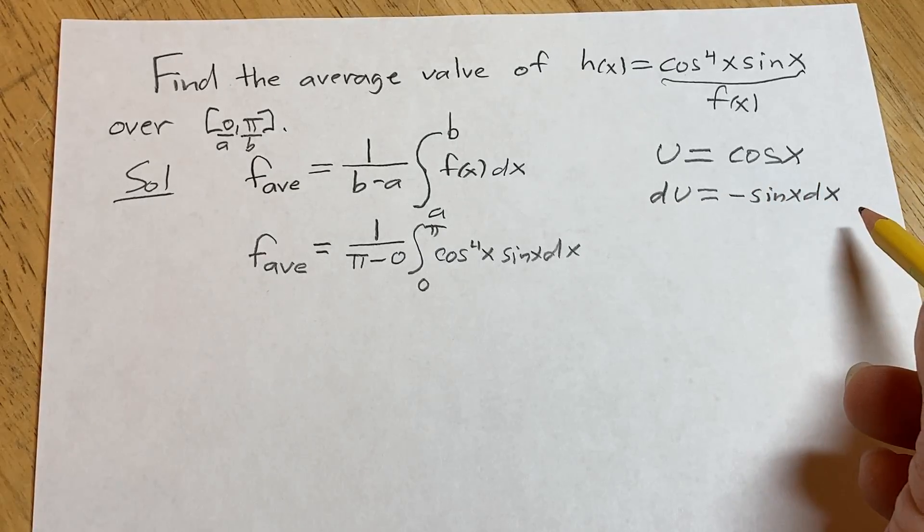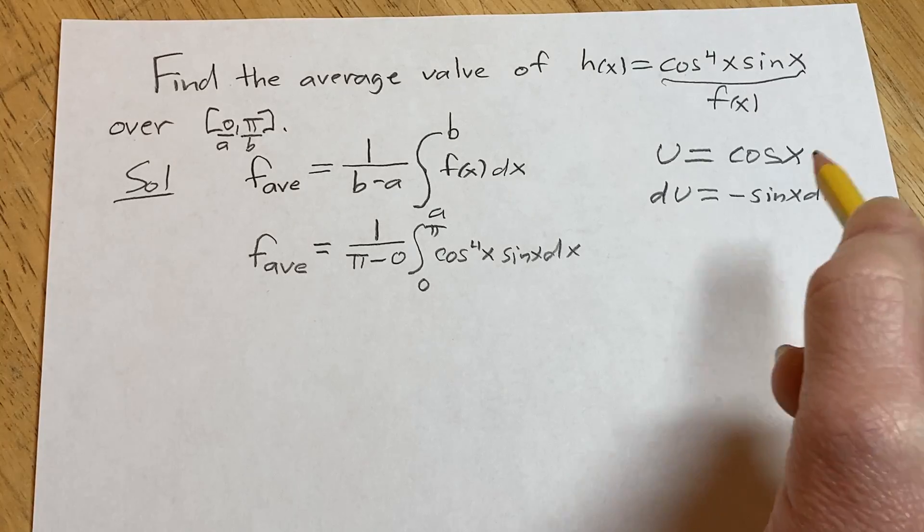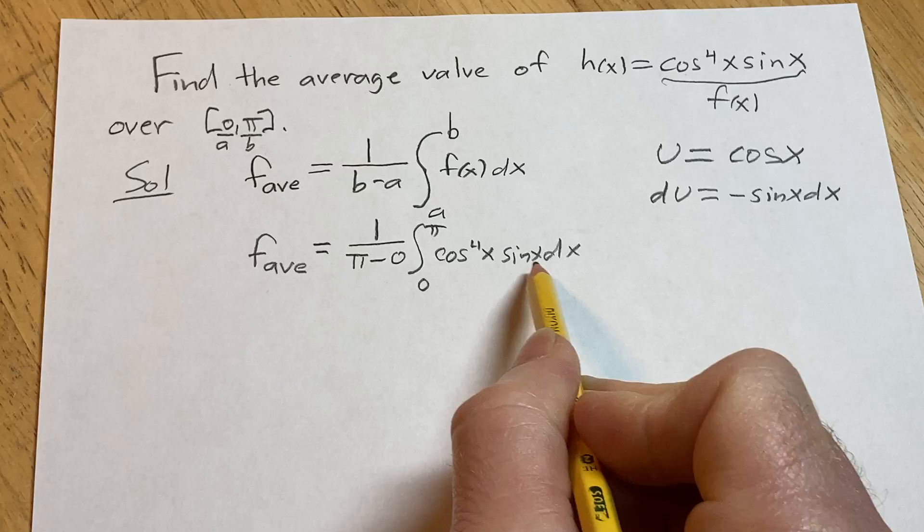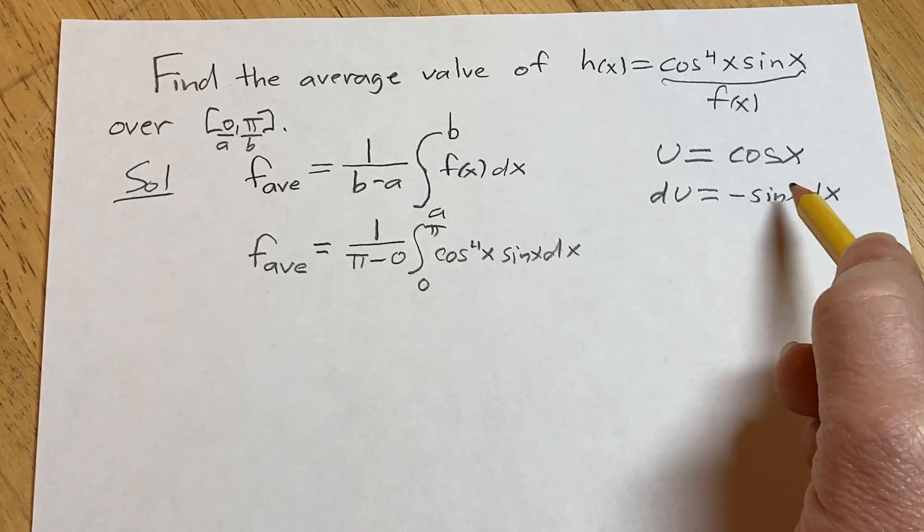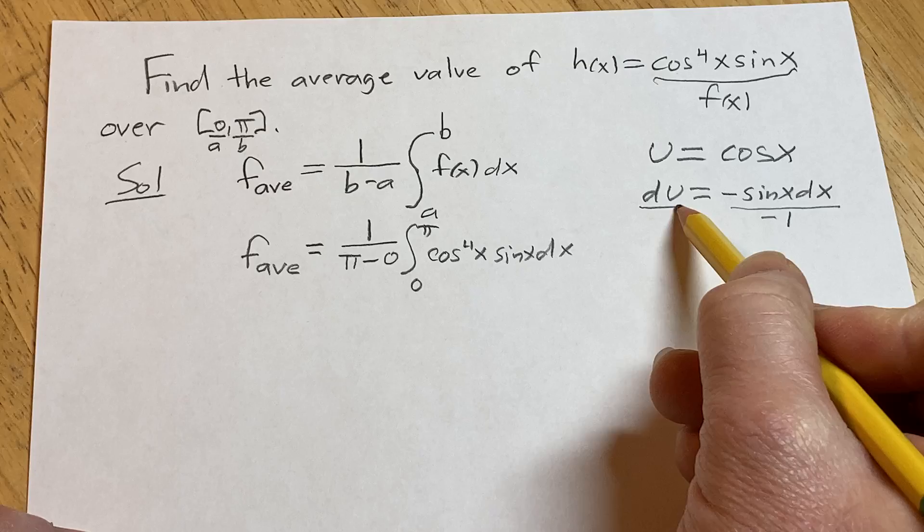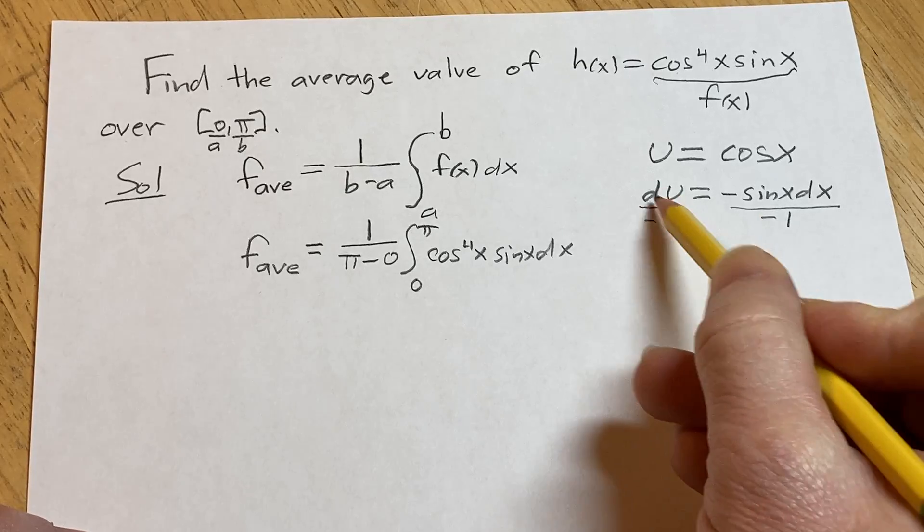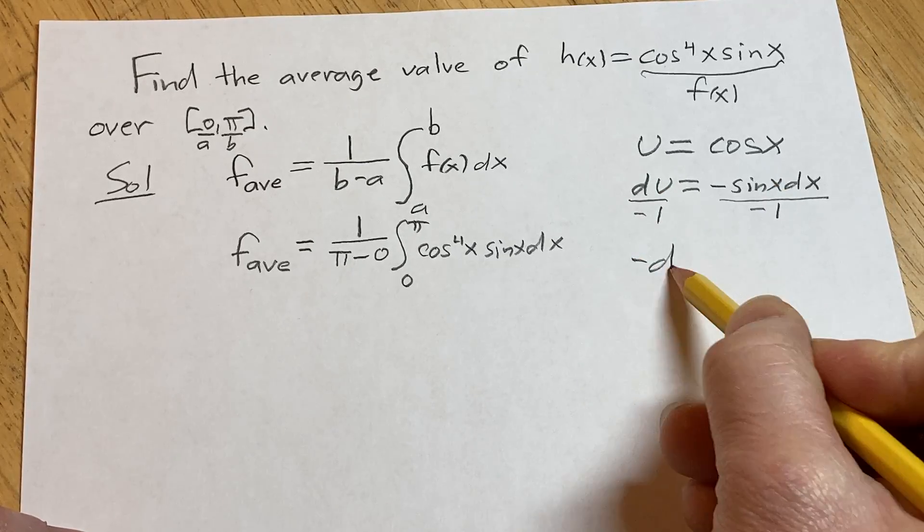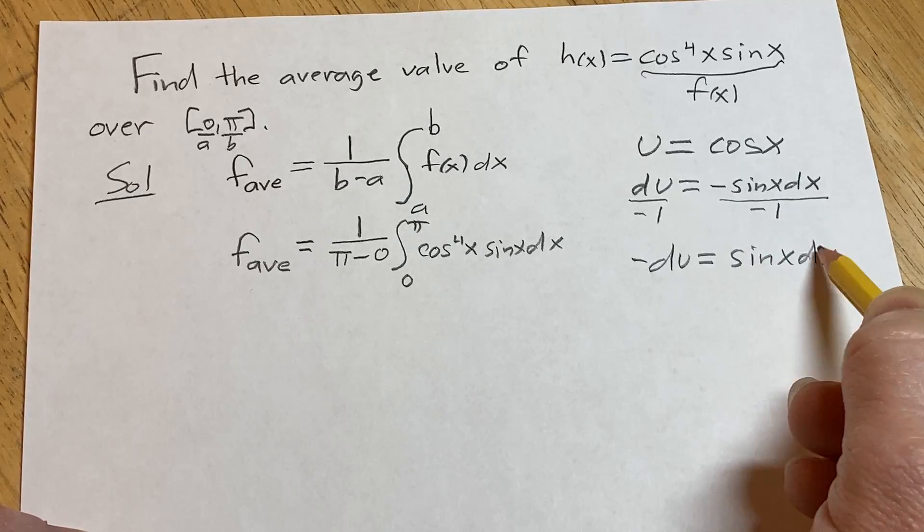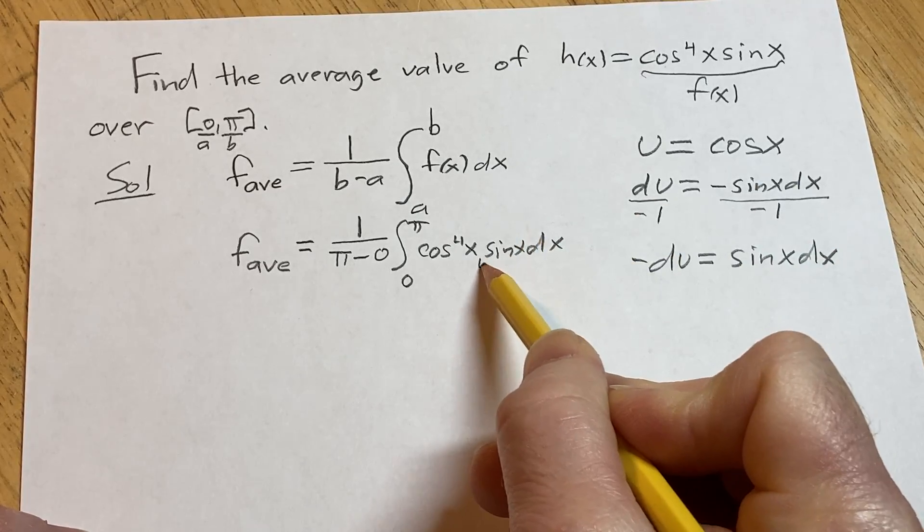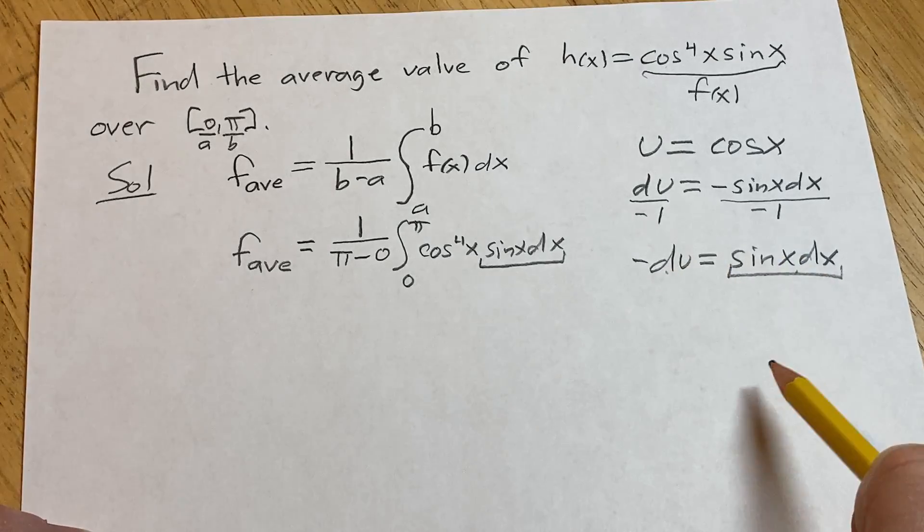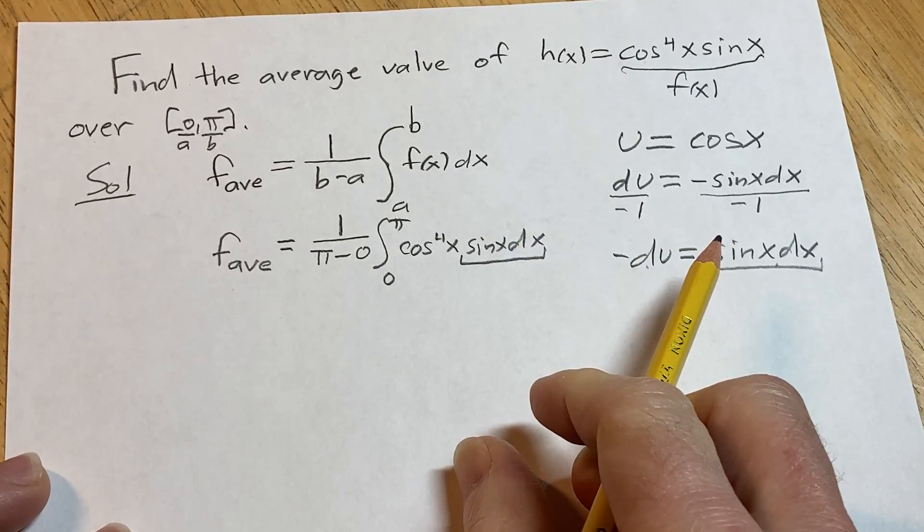Now when you get here in a substitution problem what you want to do is you want to make this look like what's in your integral. So you'll notice there's no negative sign here. So what you do is you just divide both sides or multiply by negative 1. And so we end up with negative du equals sine x dx. Good stuff. And so now you see this here matches perfectly what we have here. So sine x dx is negative du. Everything is 100% perfect.